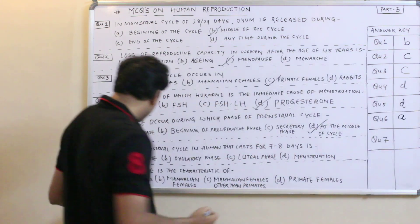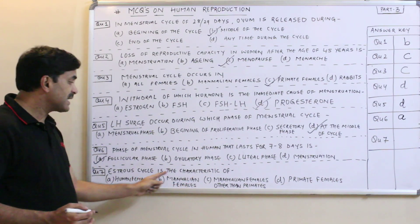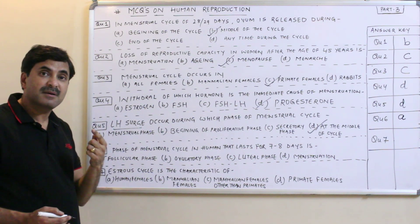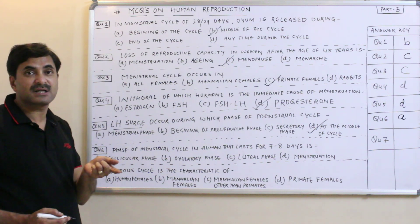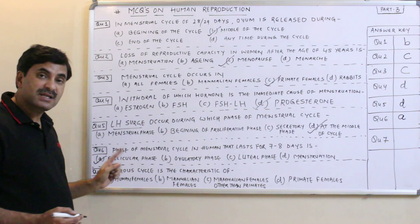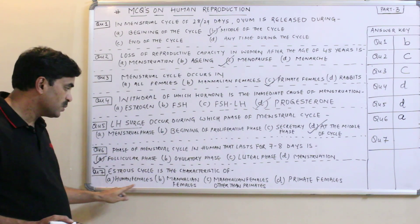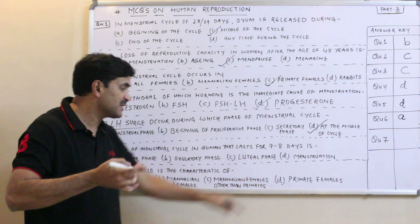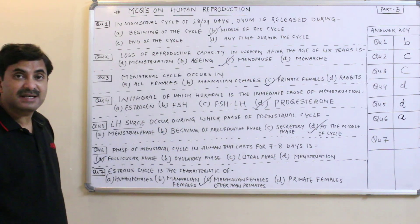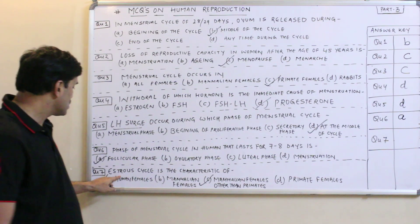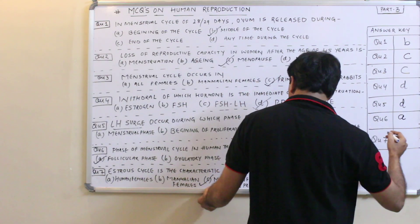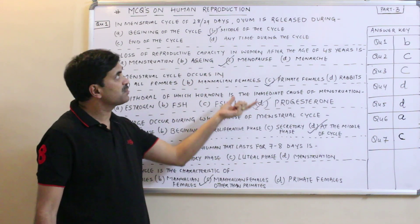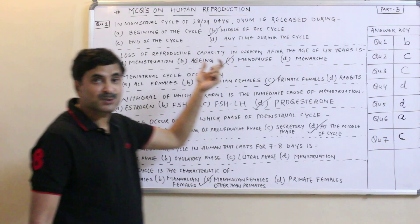Question number seven: the estral cycle is characteristic of which females? The menstrual cycle occurs in primate females, but non-primate mammalian females show the estral cycle instead. So the answer is C — mammalian females other than primates. These were some important questions on human reproduction. Thanks a lot for watching.